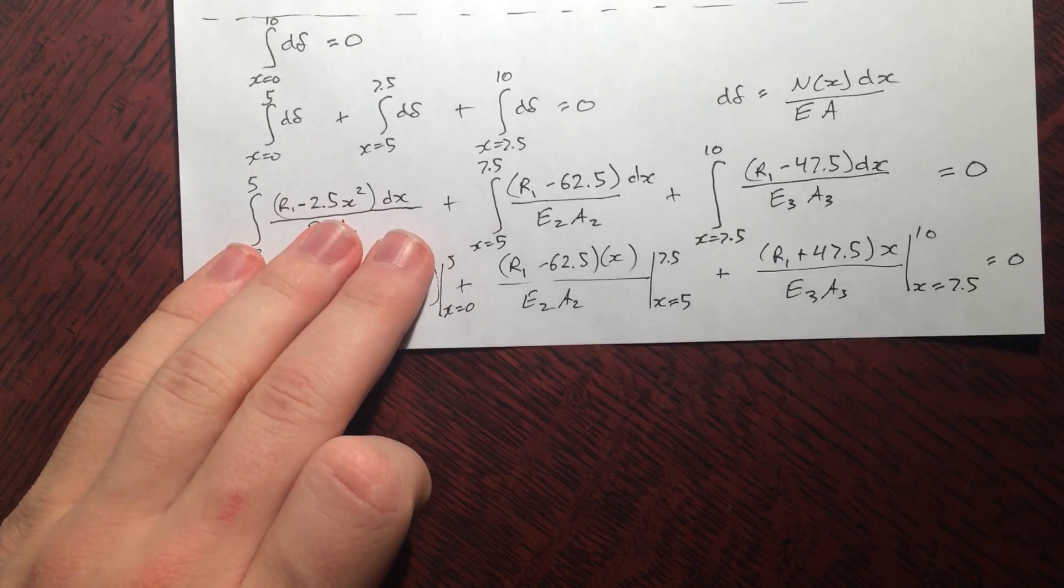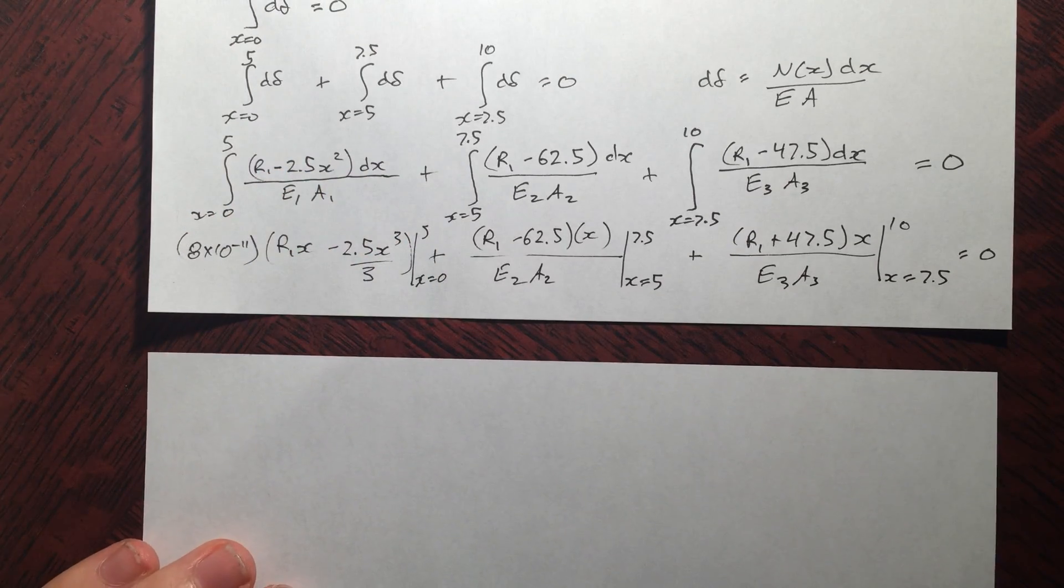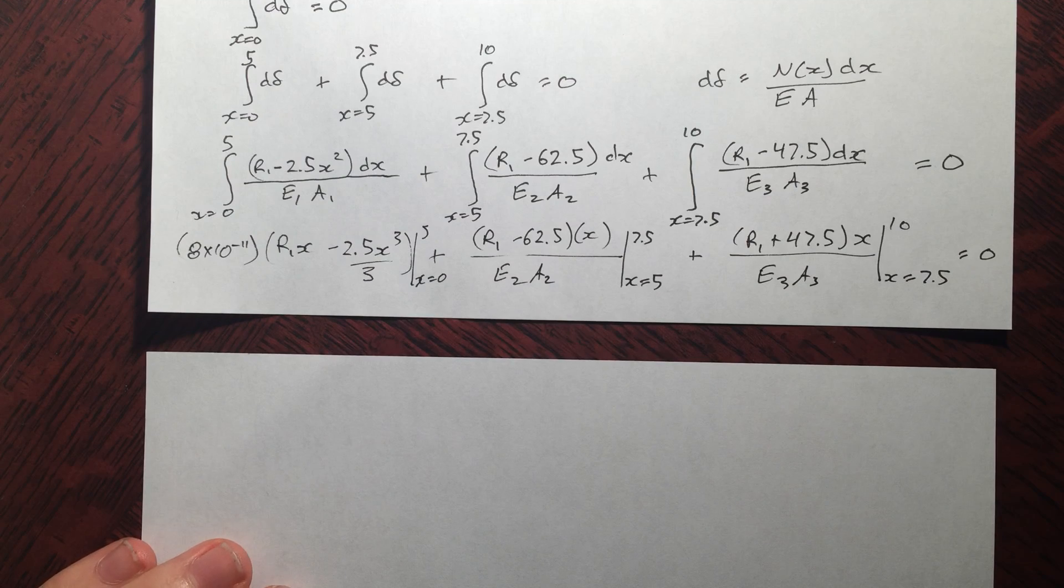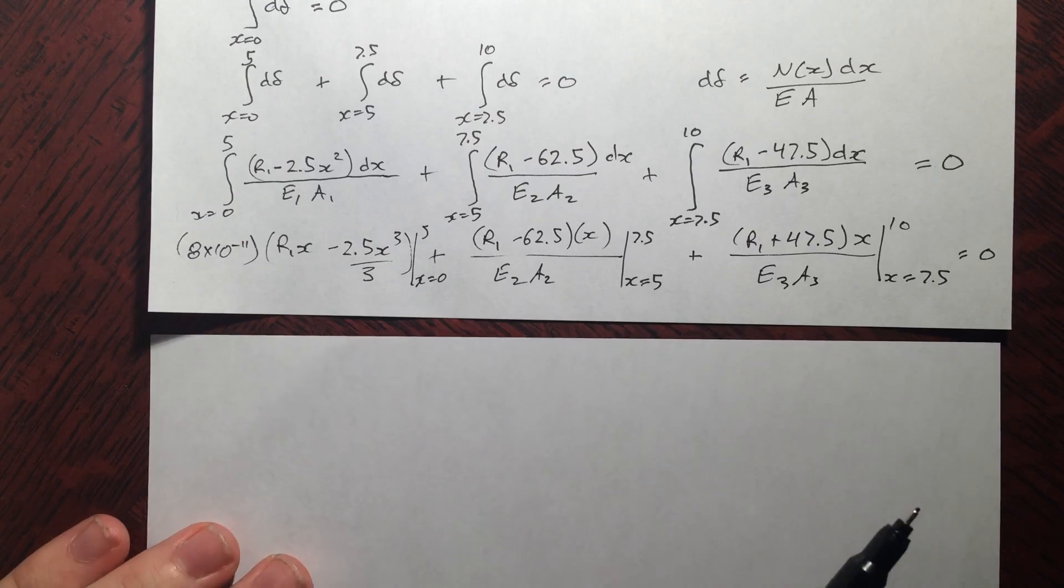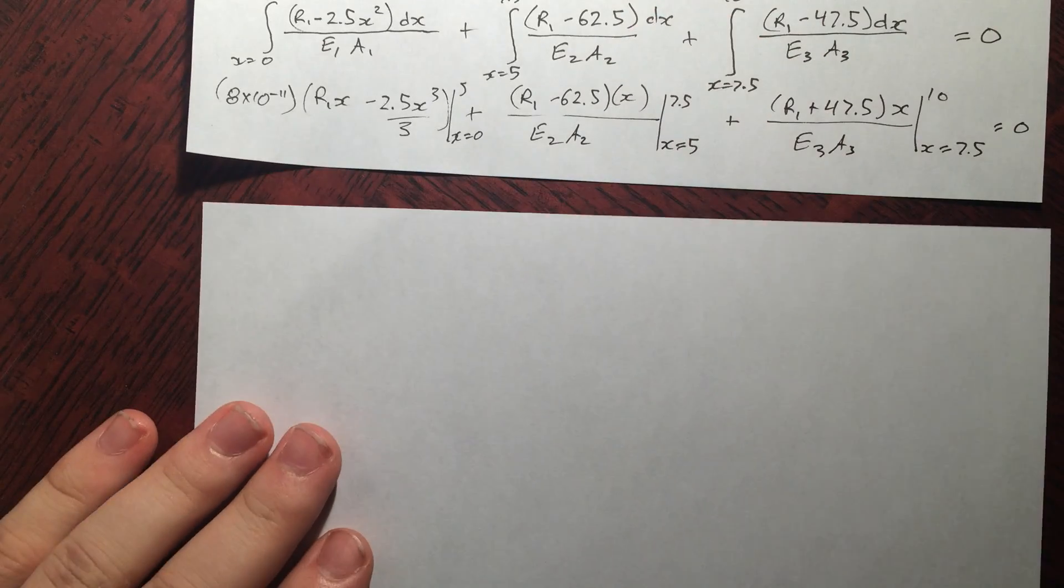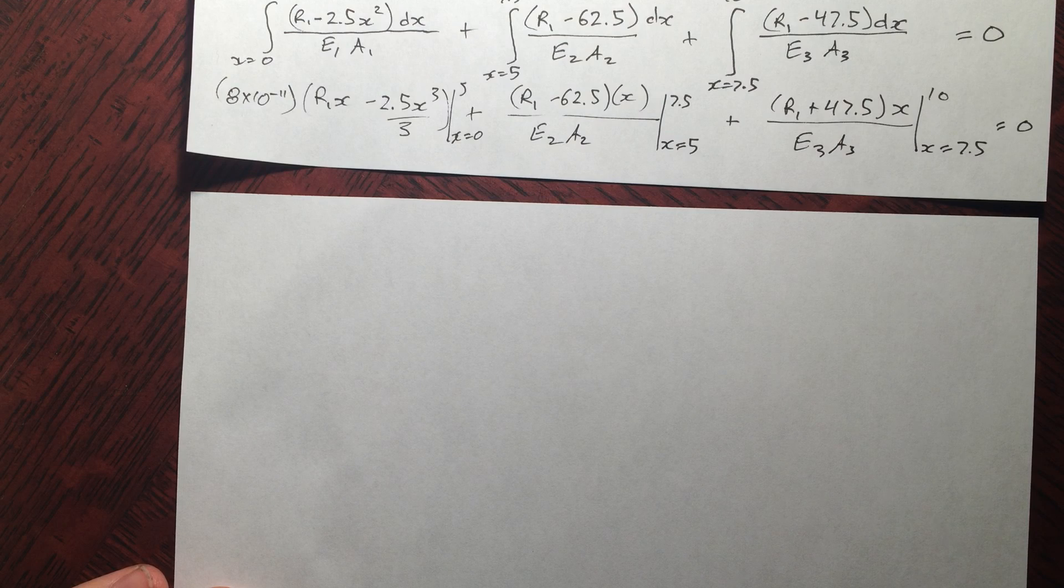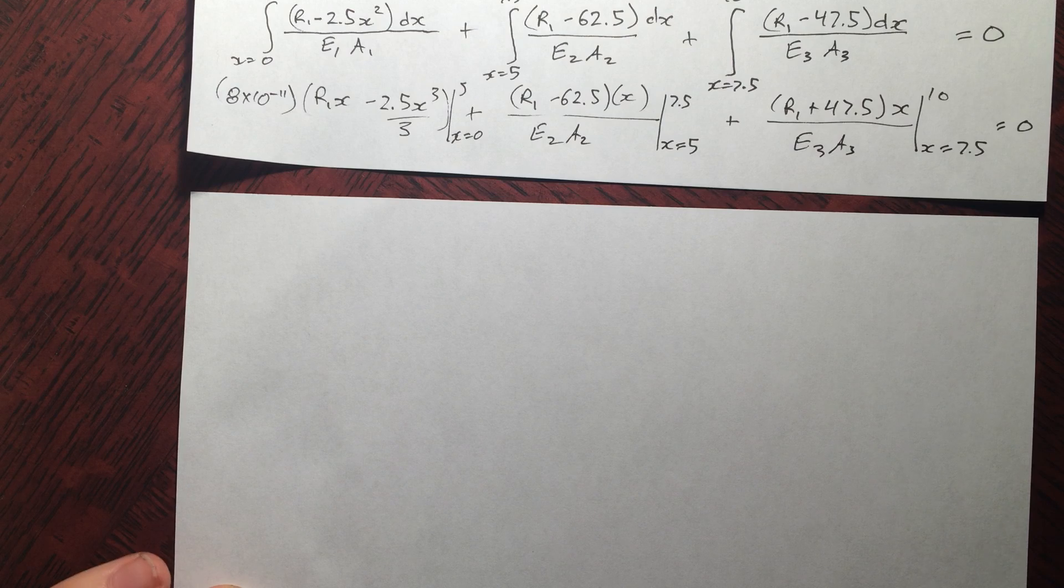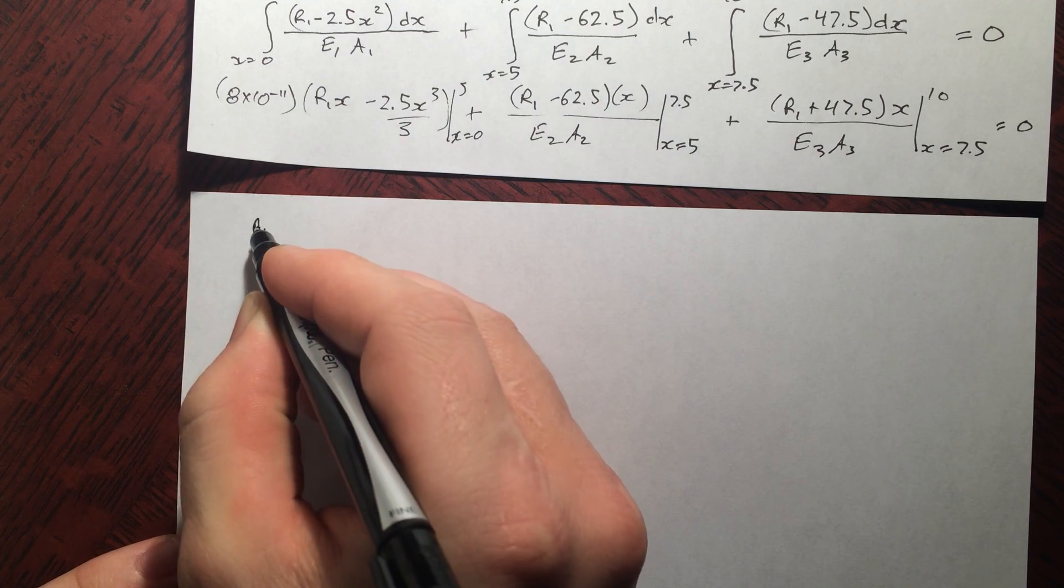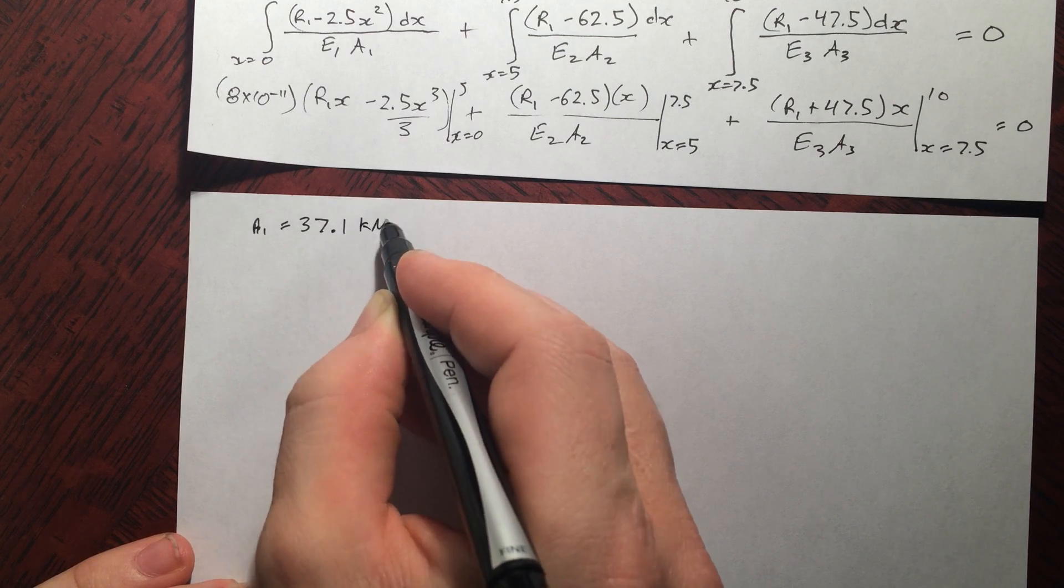I kept it all in terms of x because this is our displacement equation that will help us graph it out later. Now in order to find what R1 is, you just need to solve this equation where it equals 0. So you could expand it all out and do all that business. I would recommend just plugging this in on your calculator, or Desmos or some other graphing program, and then just finding where the whole thing equals 0, and then just take that number, find out where it crosses the x-axis. So it turns out R1 equals 37.1 kilonewtons.